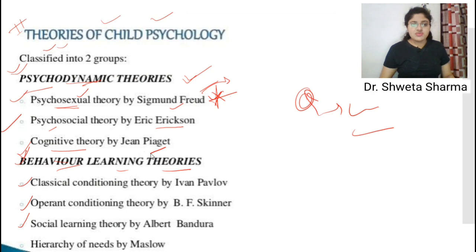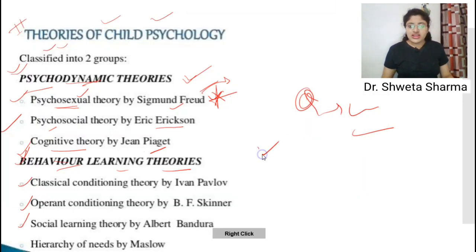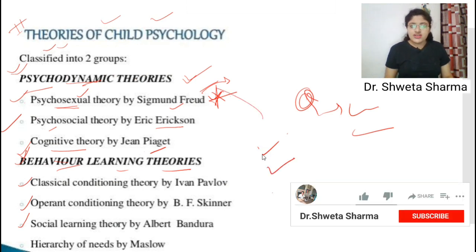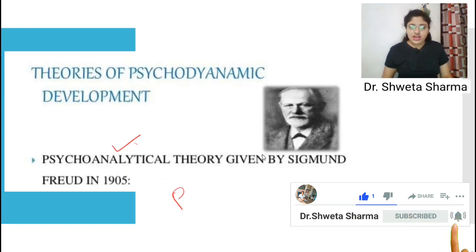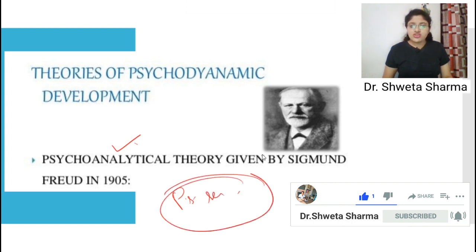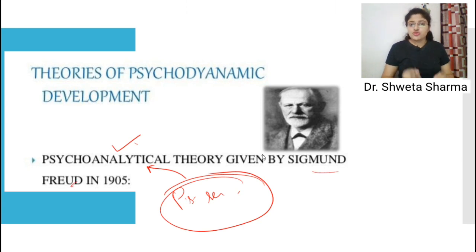So the names to remember are Bandura, Pavlov, and Skinner for behavior learning theories. To summarize: the child psychology theories are first psychodynamic and second behavior learning theories. First we defined psychology and child psychology, then we classified all theories. Now we will cover Sigmund Freud's theory, which is the psychoanalytic theory.